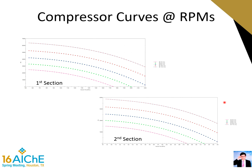To better model the overall cycle performance, the compressor curves are also input to the dynamic simulator. The x-axis is the actual volume flow and the y-axis is the head. Different curves represent the performance at different RPM. If the compressor guidelines are adjustable, those curves can be input to the simulator as well.